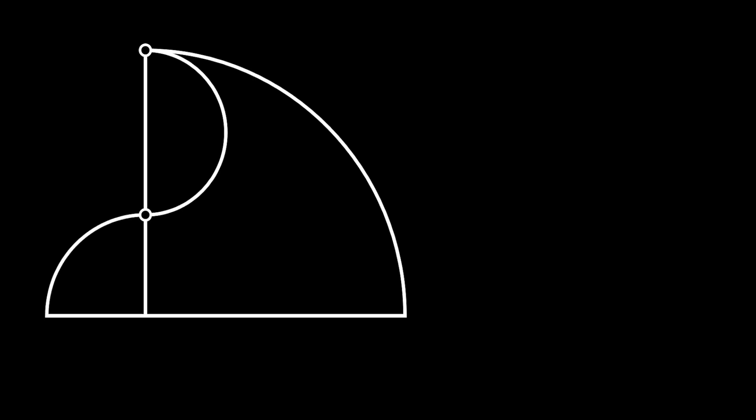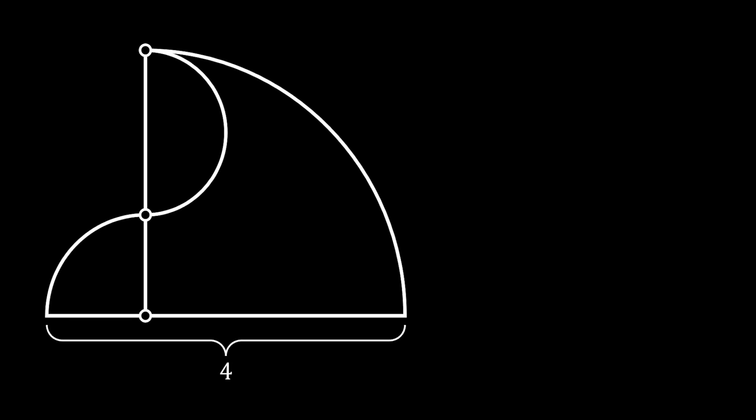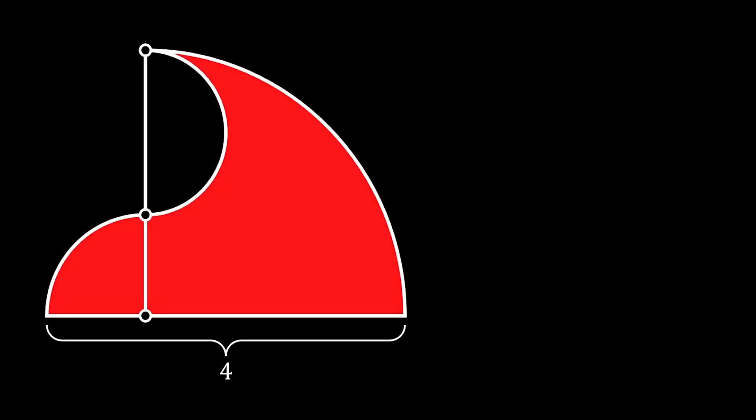Let's start with a quarter circle, then from its upper right corner let's construct a random half circle. Now from the intersection point between this half circle and our big quarter circle, we will construct another quarter circle so that its center is the same as the center of this bigger quarter circle. If the length of the bottom horizontal line is equal to four, is it possible for us to find this red shaded area?